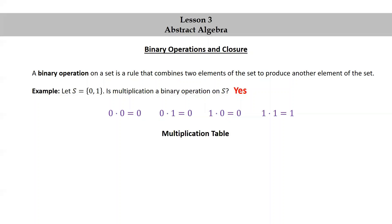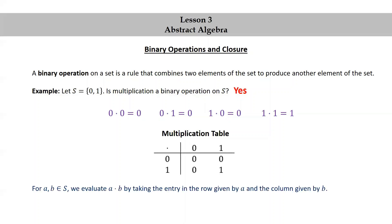Let's look at what's called the multiplication table for this operation. For A, B in S, we evaluate A times B by taking the entry in the row given by A and the column given by B. As a specific example, let's look at the computation 0 times 1 equals 0. To do this using the multiplication table, we look at the row given by 0 and the column given by 1. The entry there is 0, confirming that 0 times 1 equals 0.